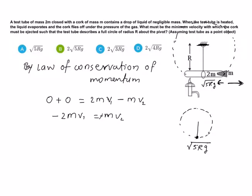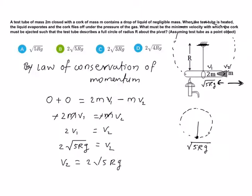Minus-minus cancel हो जाएगा, m भी cancel होगा, तो 2v1 = v2। यहाँ v2 cork की velocity है जो हमें find करनी है, और v1 test tube की velocity है जो √(5Rg) होनी चाहिए। So v2 = 2√(5Rg). This is the minimum velocity of the cork. इस तरह से हमारा option number B यहाँ पर correct हो जाता है।